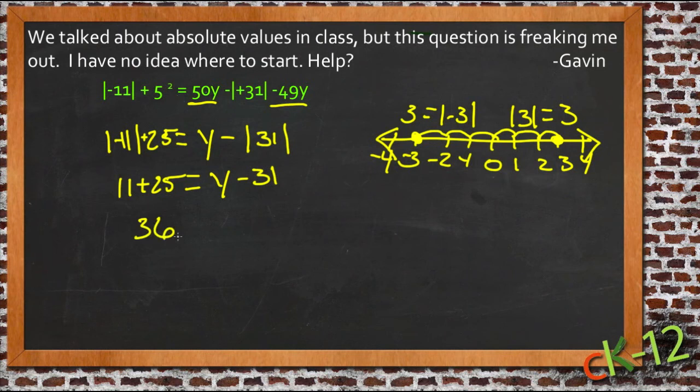11 plus 25 is 36, y minus 31 on the right. Let's get that 31 back to the other side, so we'll add it to both sides, and we'll get 67 equals y.